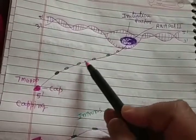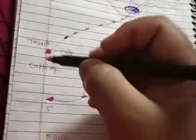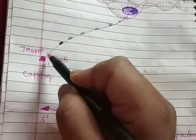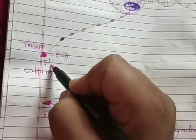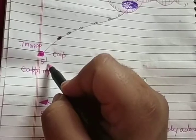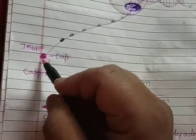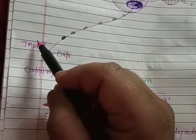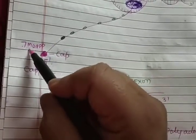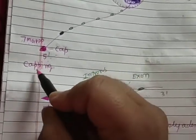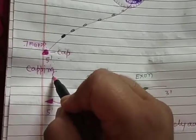To make hnRNA stable, the capping process occurs. In capping, 7-methylguanosine triphosphate is attached at the 5' end by the enzyme guanyl transferase. After attachment of 7-methylguanosine triphosphate, a cap-like structure is formed. This whole process is known as capping.